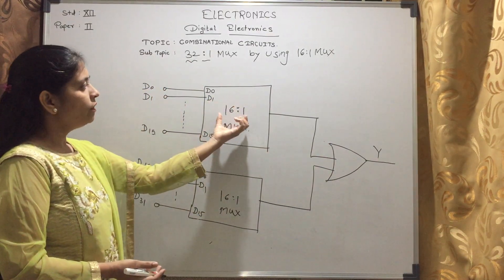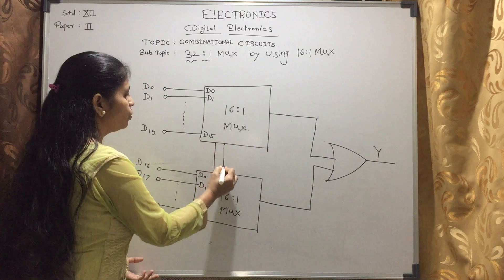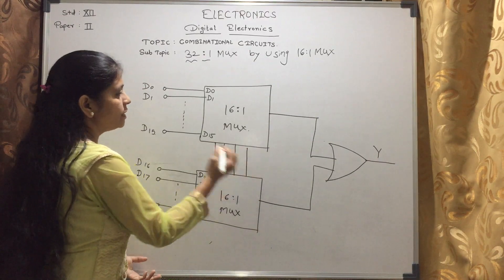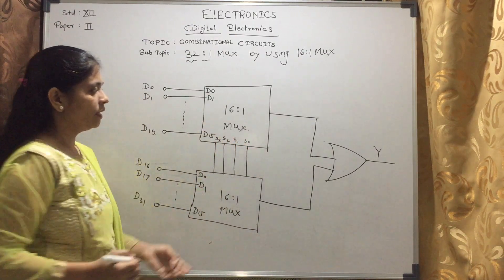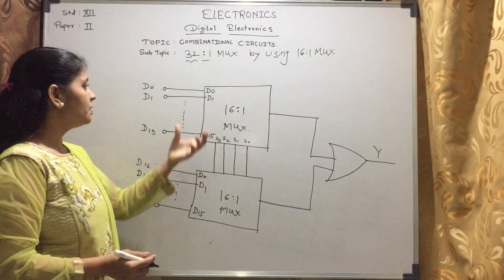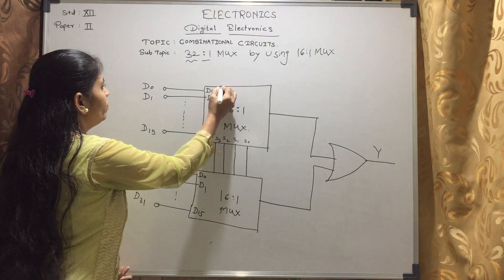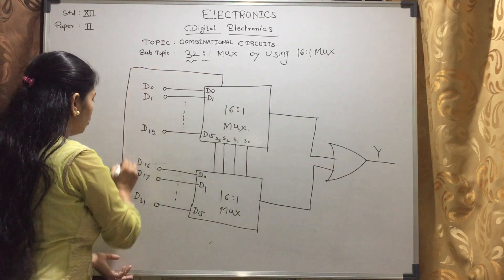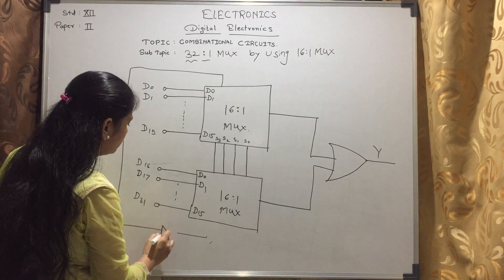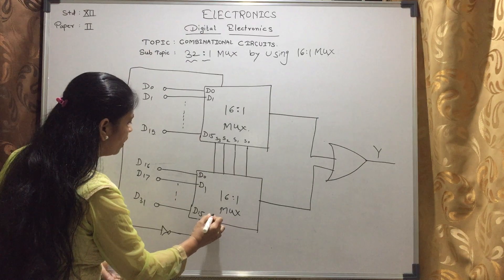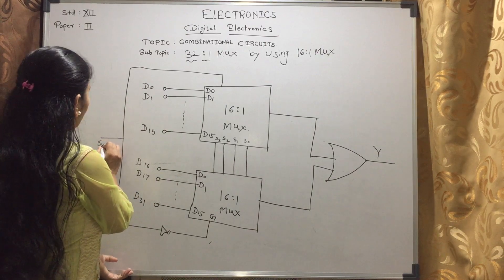Now, what about the select lines? A 16-to-1 MUX has 4 select lines: S0, S1, S2, and S3. But since this is a 32-to-1 MUX, it needs 5 select lines, so we have to add 1 more select line. This additional line is the strobe line G, which acts as the 5th select line S4.